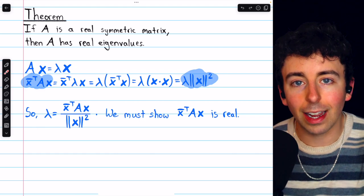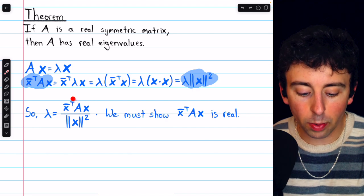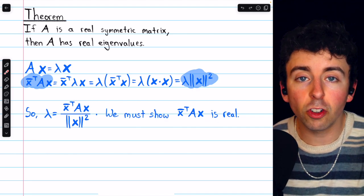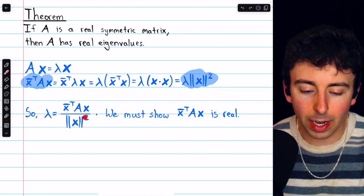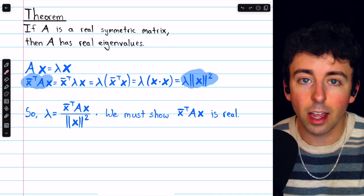Now the magnitude of x is guaranteed to be a real number, and its square is as well. So if we can show that this numerator is real, that will suffice to show that the eigenvalue lambda is real. Because the denominator for sure is a real number, so the only thing that's up in question is the numerator.